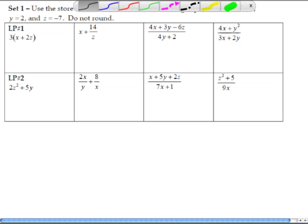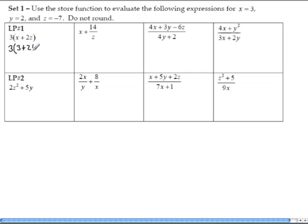Let's show some work. Write 3 times, open parenthesis, substitute x = 3, plus 2 times z = -7, close parenthesis. I'm showing my substitution, then write the answer: negative 33.